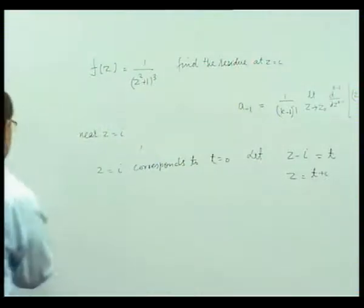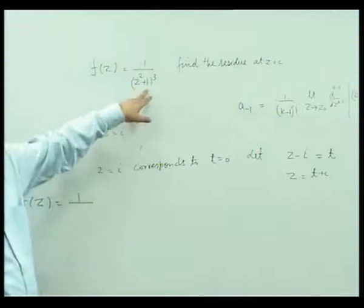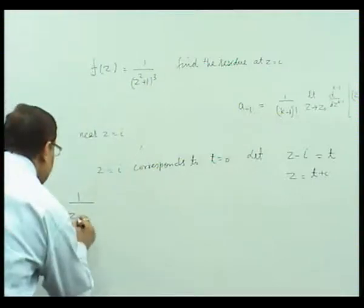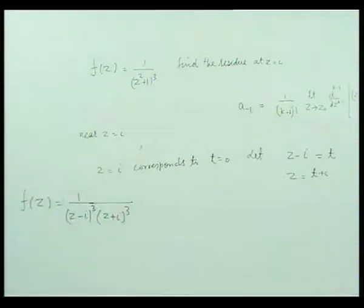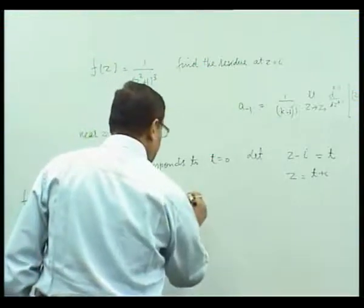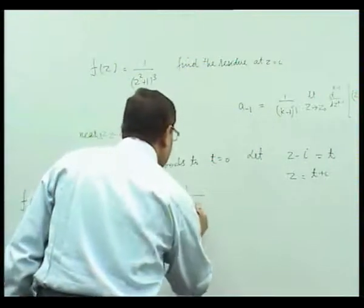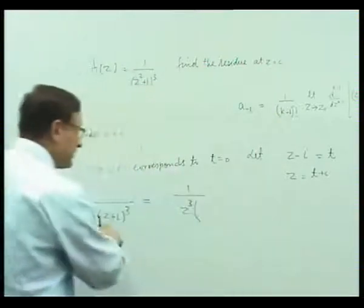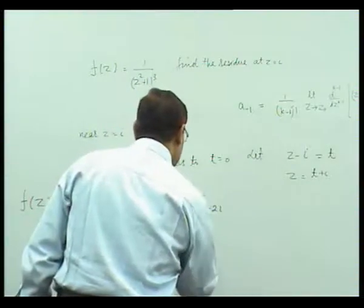Then f(z) = 1/(z²+1)³. If you factorize it, this can be written as 1/[(z - i)(z + i)]³, which is 1/[(z - i)³ · (z + i)³]. Substituting z = t + i, the factor (z - i) becomes t³, and the factor (z + i) becomes (t + 2i)³.